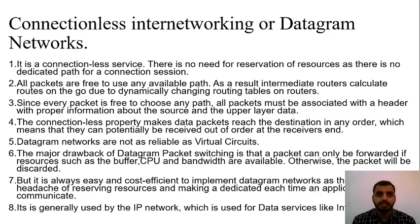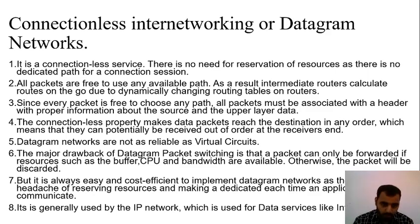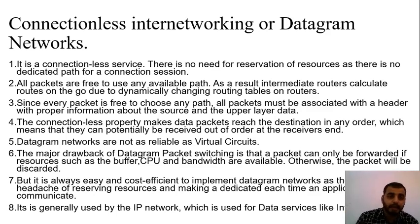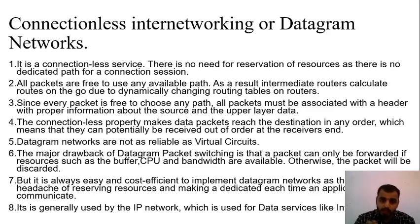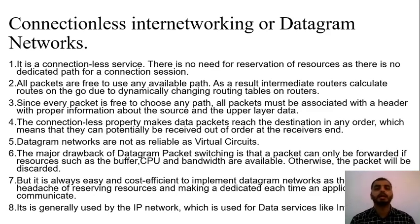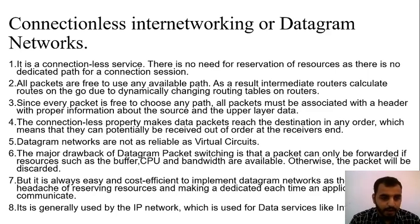If 10 tables in a hotel are pre-booked by 10 people, all 10 resources are allocated. If an 11th person comes, they must wait until a table is freed. In a dynamic restaurant scenario, the 11th person might be seated if someone leaves, or may have to wait. This is the dynamic nature of datagram networks. It is generally used by IP networks for data services like the internet.